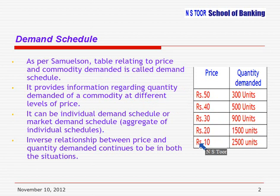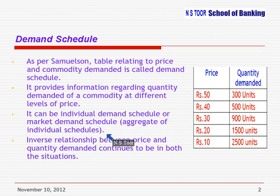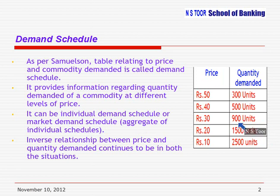Now, demand schedule can be the demand schedule of an individual consumer, or it may be a demand schedule for the market. Market demand schedule is an aggregate of individual demand schedules. If we have demand schedules for different individual consumers and we aggregate all those, what we get is the market demand schedule.